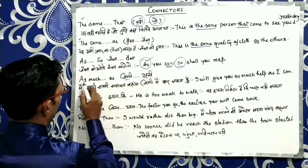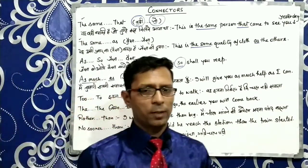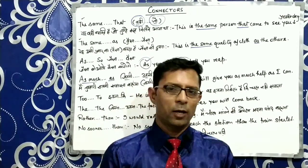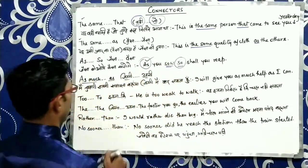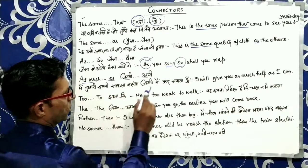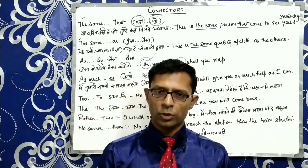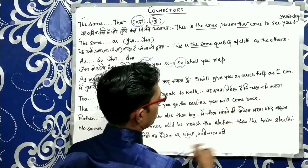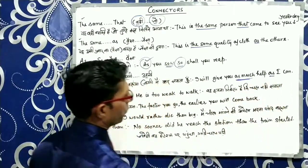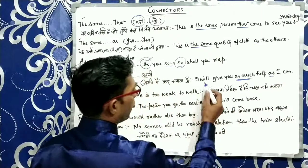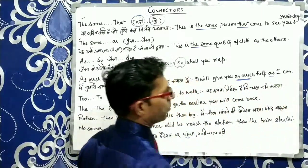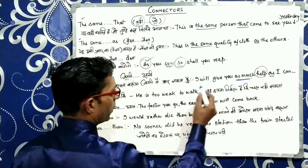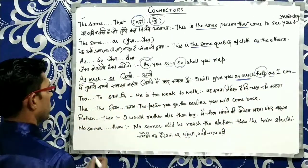اگلا connector ہے As Much As — جتنی اتنی. Much ہمیشہ uncountable ہوتا ہے اور many ہمیشہ countable. مثال: میں تمہاری اتنی مدد کروں گا جتنی میں کر سکتا ہوں. I will give you as much help as I can. یہاں پر دوبارہ verb لکھنے کی ضرورت نہیں کیونکہ same verb کام کرے گی.